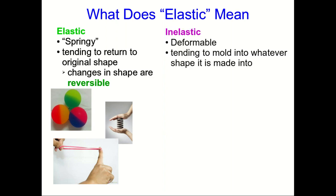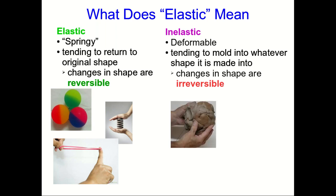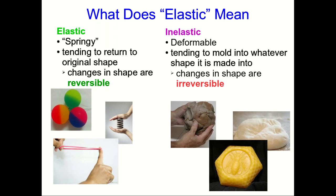On the other hand, inelastic things are deformable. You often would call them plastic, which just means moldable. You can mold them into shape, and they stay in that new shape. So changes to their shapes are irreversible. Things like clay, bread dough, wax.